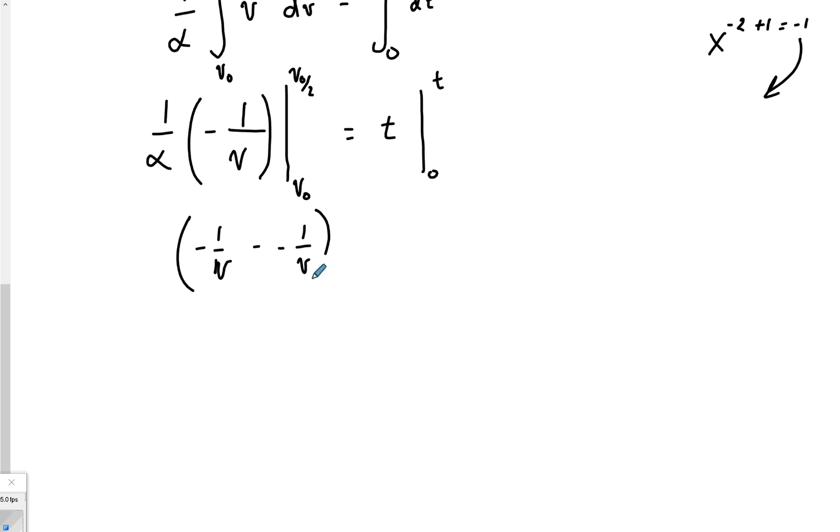So in the case of what we're actually doing here, what's our final v term? It's v over 2, v0 over 2. So we've got this negative 1, v0 over 2, minus negative 1 over v0. Well, minus negative is plus 1 over v0.